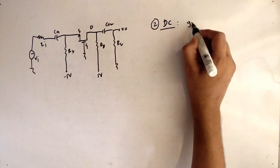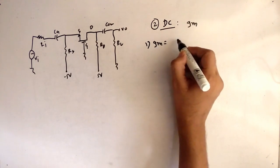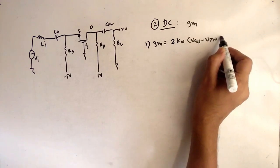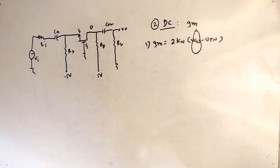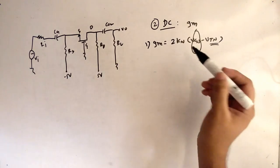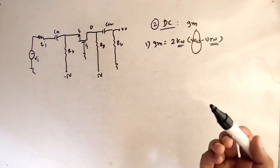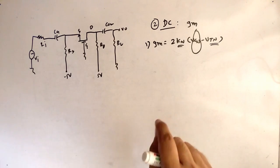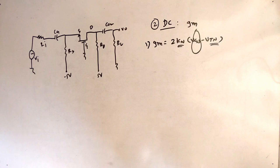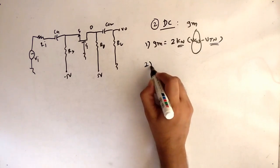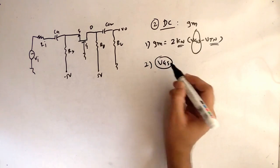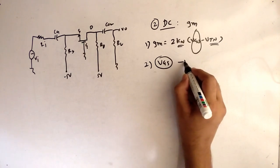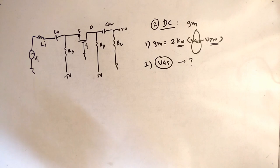Our second point is to do DC analysis to find the term gm. The equation for gm is: gm = 2kn(Vgs - Vtn). Our task is to find Vgs, because Vtn and kn are given in the question — the only unknown in this equation is Vgs. The problem is you cannot find Vgs directly, so finding it is the tricky part.